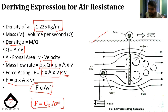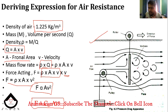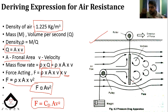The air is moving past the car. At the back of the car, vortex formation occurs. If we look at the edge, it looks like a vortex. This vortex formation keeps forming at the rear end.